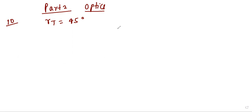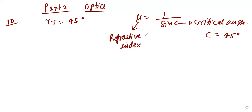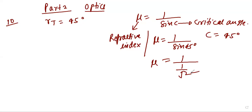The relation between critical angle and refractive index is given: mu is equal to 1 upon sin(c), where sin(c) is your critical angle and mu is your refractive index. Now put the value — the angle c is given as 45 degrees, so mu = 1 / sin(45°) = 1 / (1/√2) = √2. So mu is equal to √2.